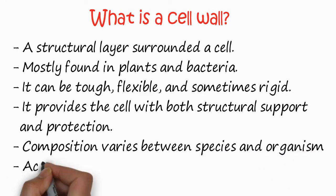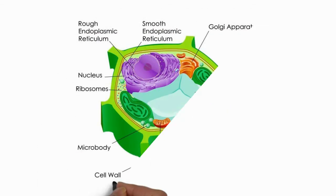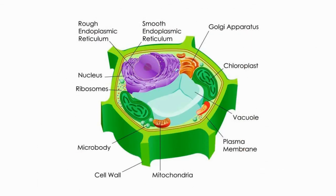Composition of the cell wall varies between species and organism, and it is a filtering mechanism. In plant cell, you can see this structure. The green surrounding walls are usually called cell wall, and the yellowish is the cell membrane, and these are the other organelles.